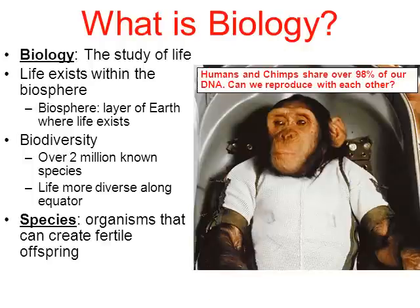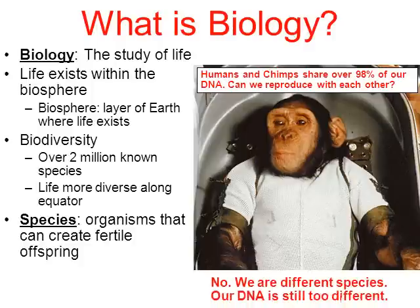What about a chimpanzee? A chimpanzee is the closest living relative to humans on Earth, and humans and chimps are over 98% identical in DNA. Can a human and a chimpanzee reproduce and make a hybrid baby? The answer is no. Even though we're over 98% identical, we're just not identical enough. We are different species.